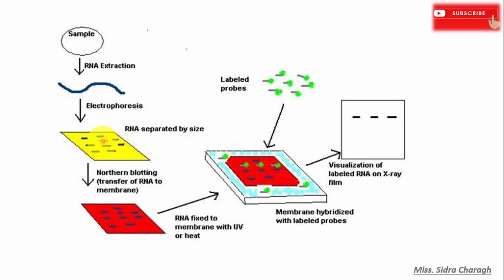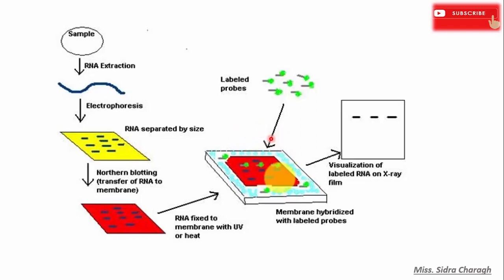RNA molecules are transferred from the gel to a nylon membrane, which is then incubated with radioactively or non-isotopically labeled RNA probes, DNA probes, or oligodeoxynucleotide probes. The unhybridized probe is removed by washing with buffer. Finally, radiolabeled probes are visualized with X-ray film and enzymatically labeled probes are visualized with chemiluminescence.